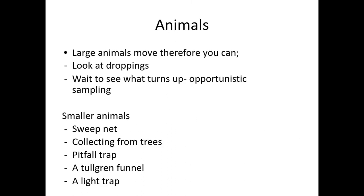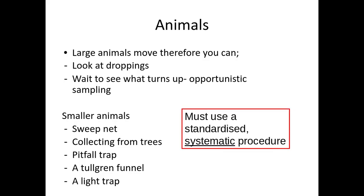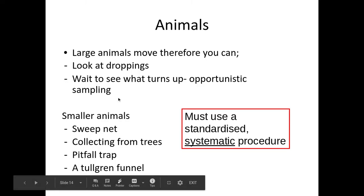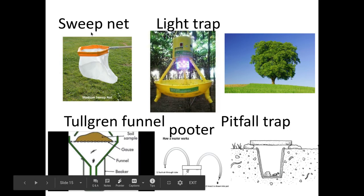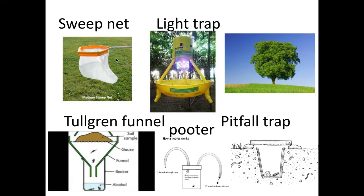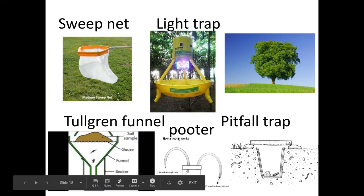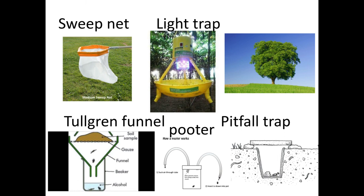Animals are slightly different. We can either look at droppings or wait to see what turns up — that's opportunistic sampling. It's really important that whatever method you use, it's a systematic procedure. For a sweep net, you have to use it in the same figure-of-eight motion, for example. A light trap should be used for the same amount of time. You can also put a white sheet underneath a tree, shake the tree, and catch the insects falling out, then use a key. For each of these methods, make sure you're using a systematic approach — research the systematic method for each one.